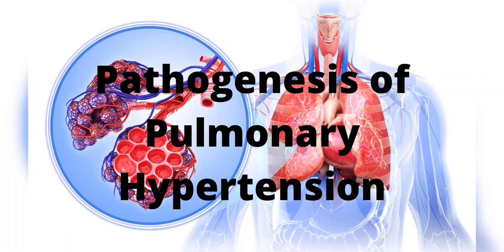Pathogenesis: Under normal conditions, the pulmonary circulation is a low-pressure — MPAP 12–16 mmHg — high-capacity circuit. Healthy individuals can accommodate up to a fourfold rise from resting cardiac output with little increase in PAP, due to distensibility of the thin-walled pulmonary vasculature and to recruitment of vessels that are normally closed when at rest.